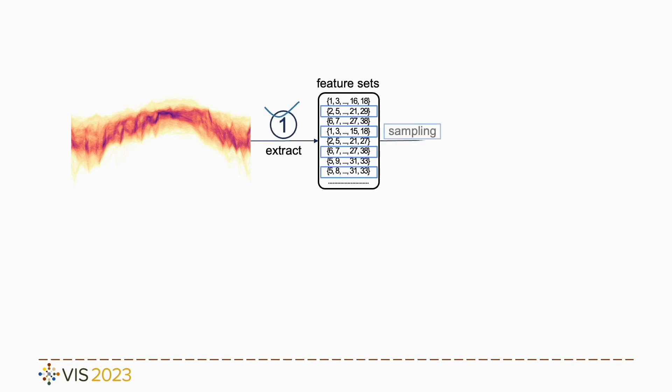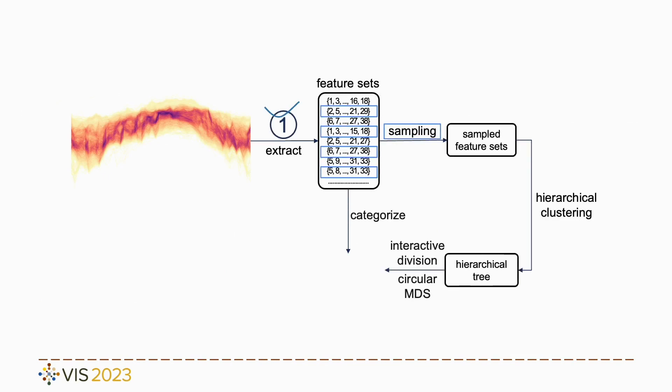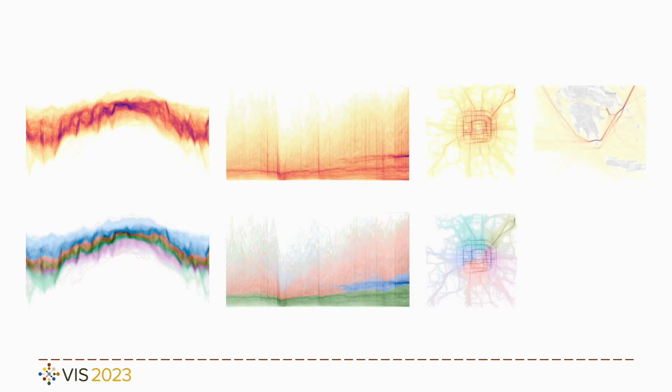To reduce ambiguity in line-based density plots, we employ coloration to highlight similar sections. Our approach is applicable to both time series and trajectory data.